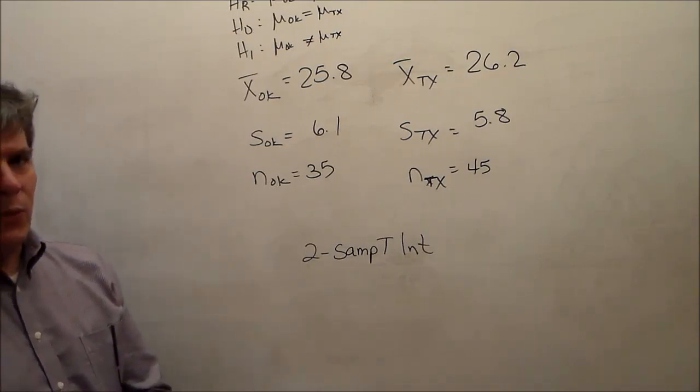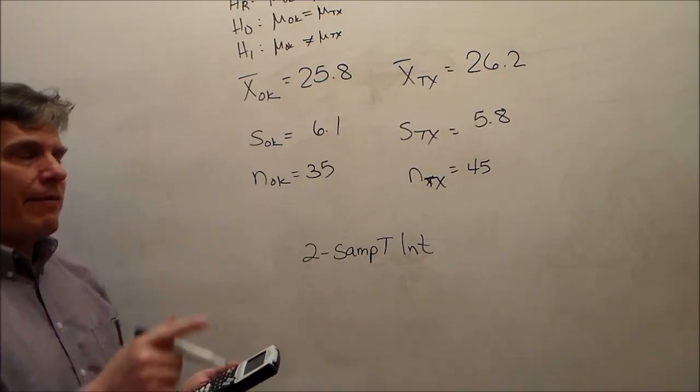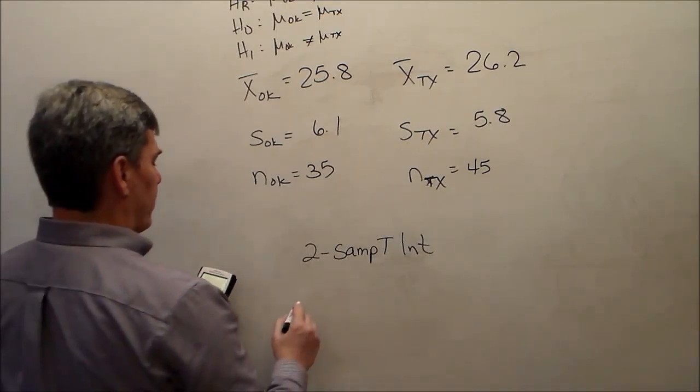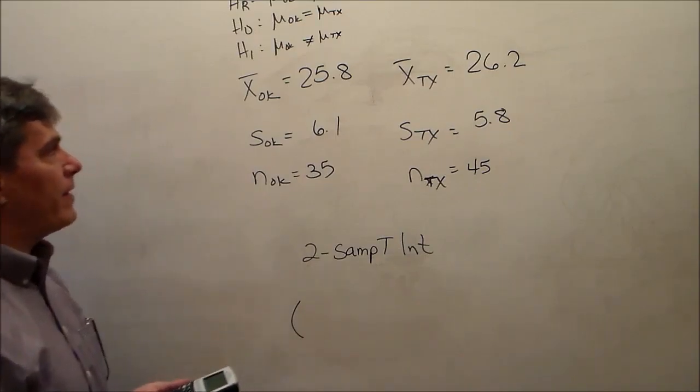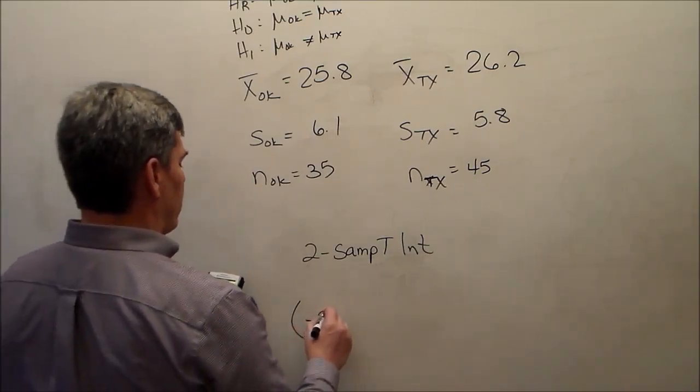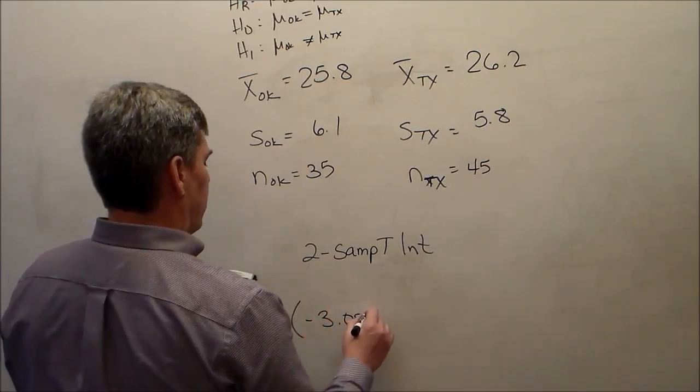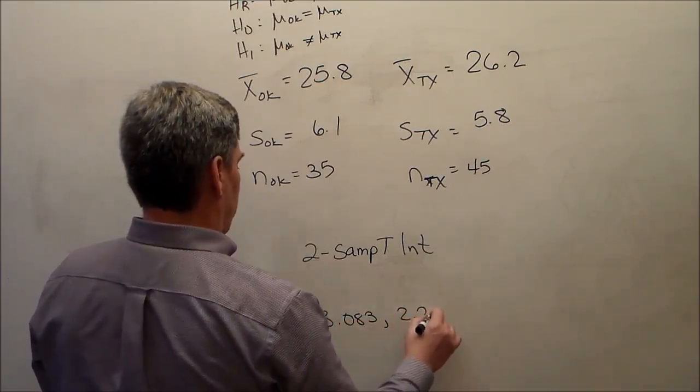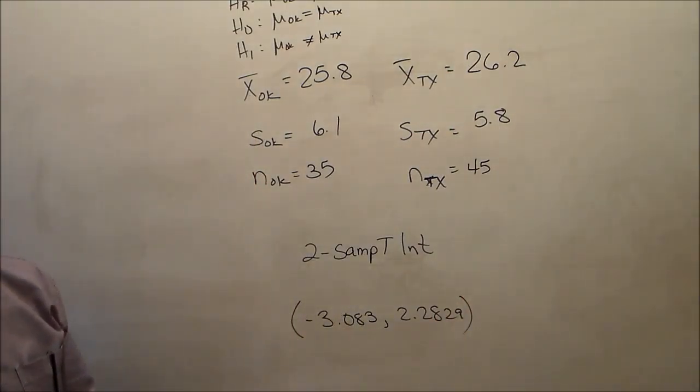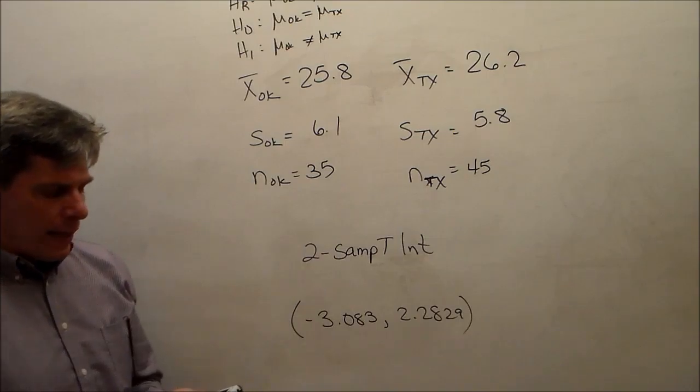The confidence level, again, is 0.95, because the alpha given at the top was 0.05. Again, we do not pool. So we're 95% confident that the difference in average corrosion rates between Texas and Oklahoma is between negative 3.083 and 2.2829.